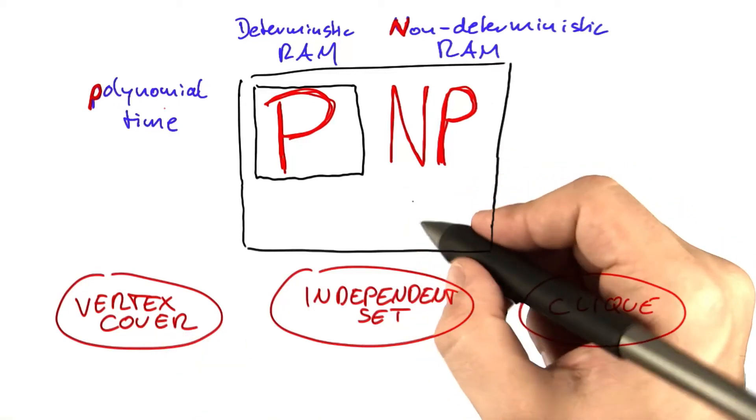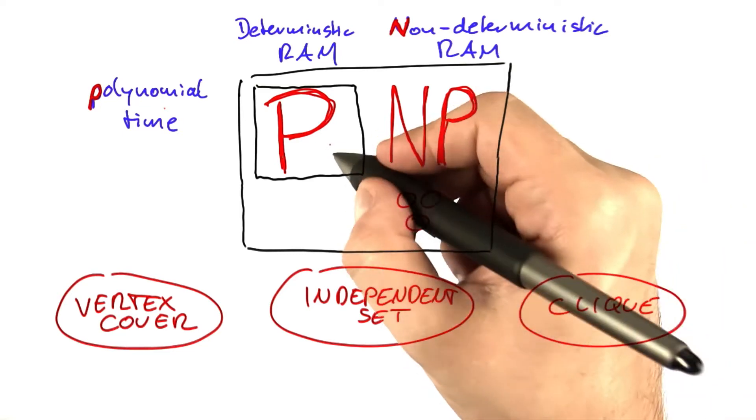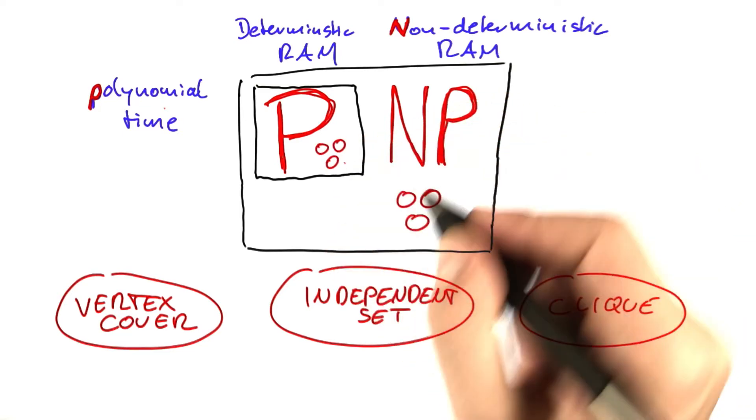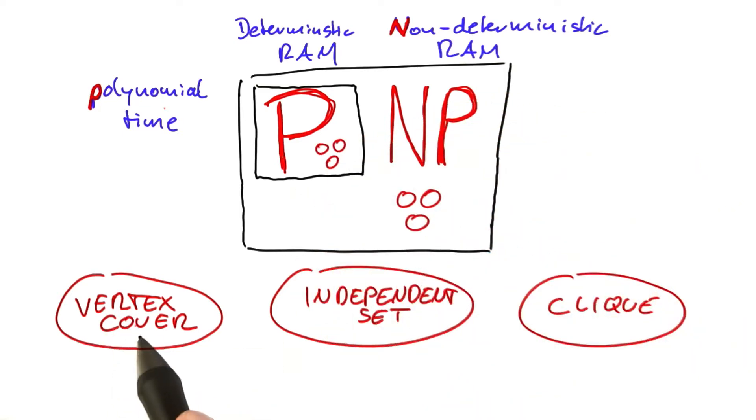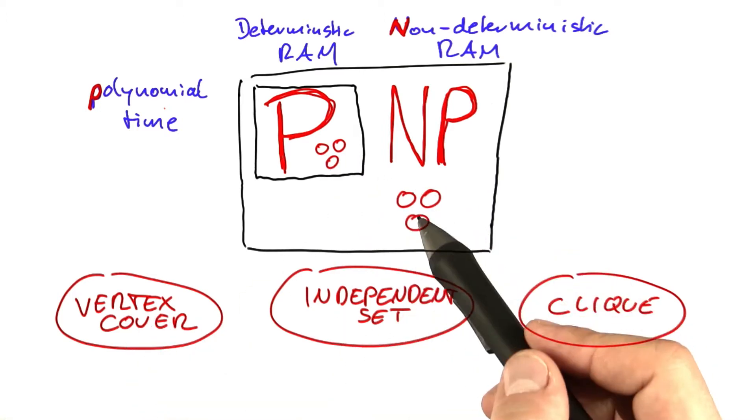So our three problems are so closely related that either all of them lie here in NP but not in P, or all of them lie in P. We don't know which one it is, but it can't be the case that, for example, we have just vertex cover in P and the other two problems here in NP.